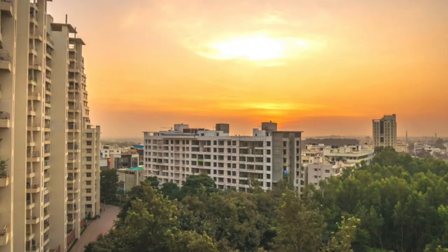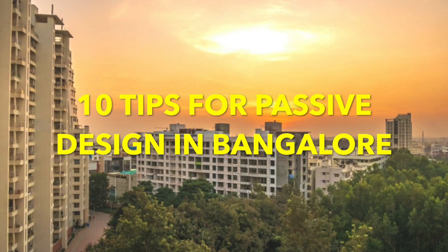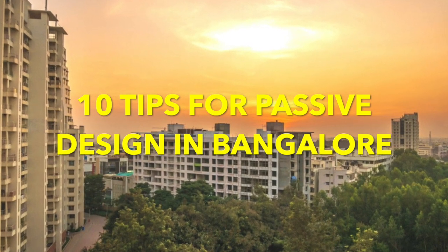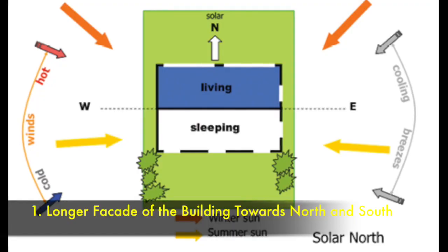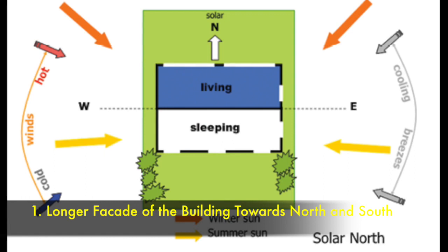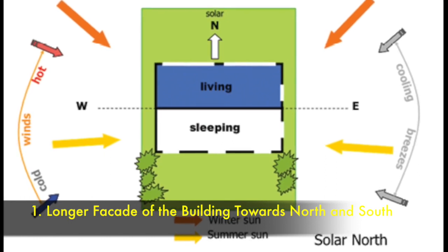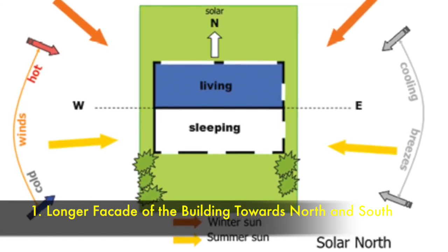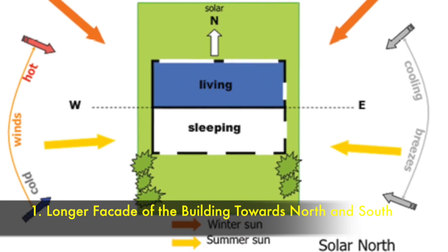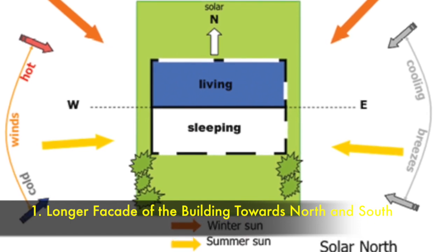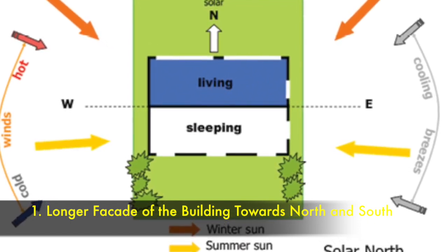Here are 10 points which you should incorporate while designing and construction. The first one is make sure you place your building in such a way that the longer side of the building is facing the north and the south, because this will reduce the solar radiation.